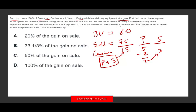In the consolidated income statement, Salem's recorded depreciation expense on the equipment by year one will be decreased by how much? They're already telling you that somehow you have to decrease your depreciation on the consolidated financial statement and how much it's going to be decreased by.